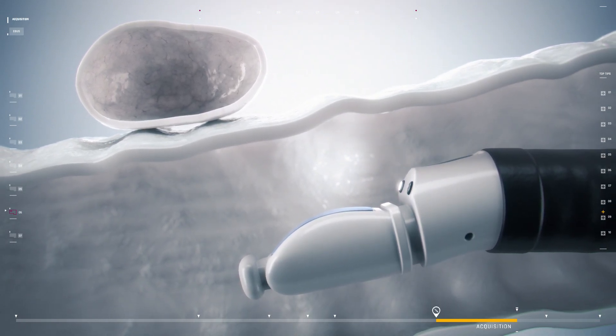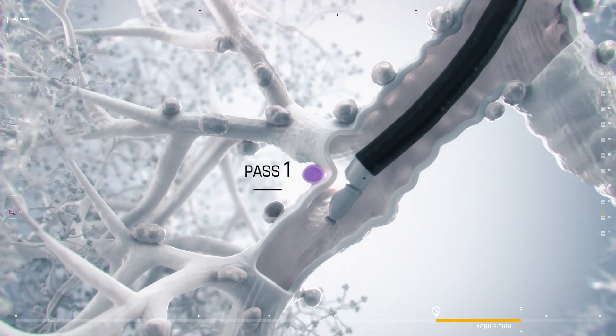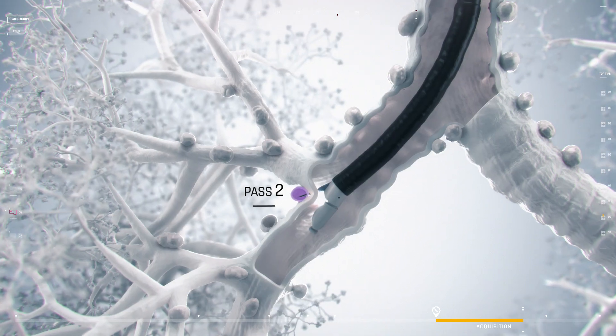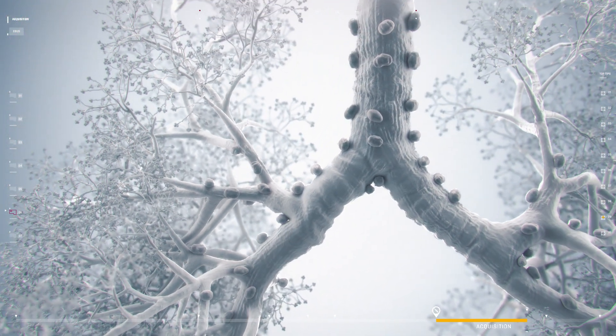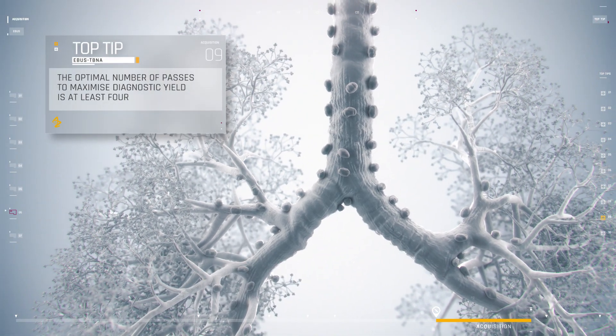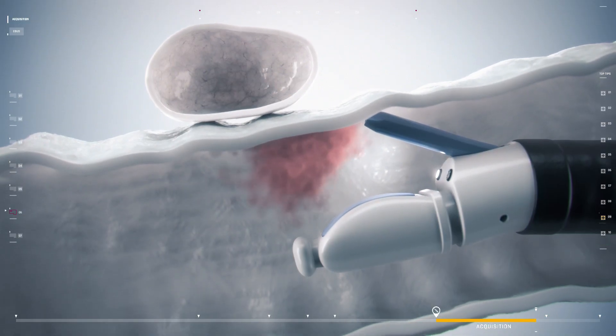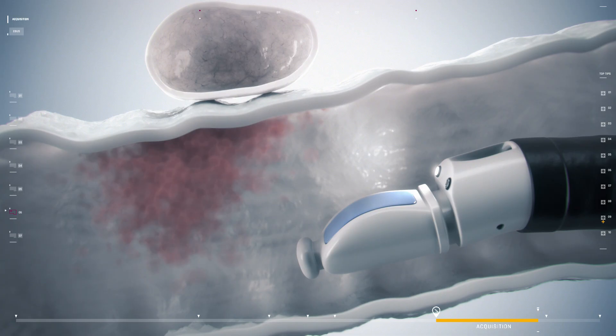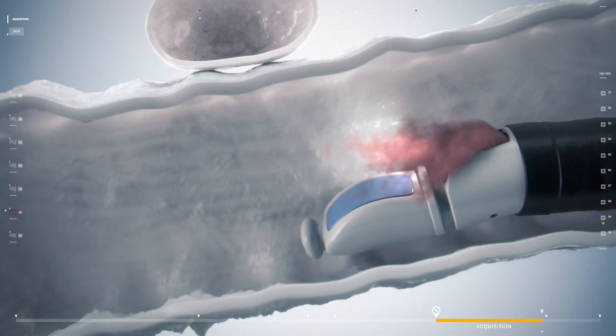The number of needle aspirations per site can impact the yield and can range from three to seven aspirations depending on the study, but the first pass has the highest yield. The optimal number of passes to maximize diagnostic yield is at least four. Immediately after sample acquisition, it can be helpful to move the bronchoscope distal under suction to prevent any blood that was released into the airways from traveling further into the bronchial tree.